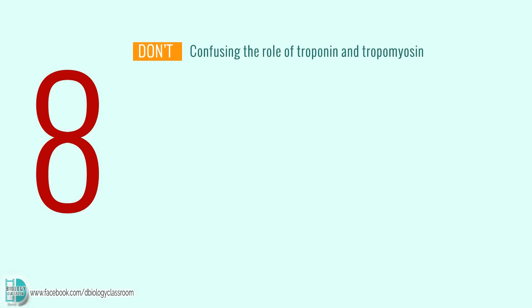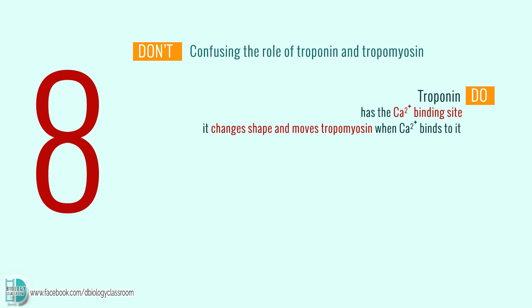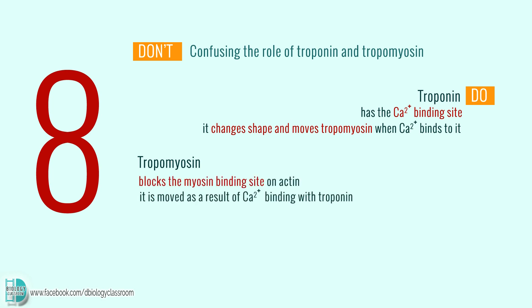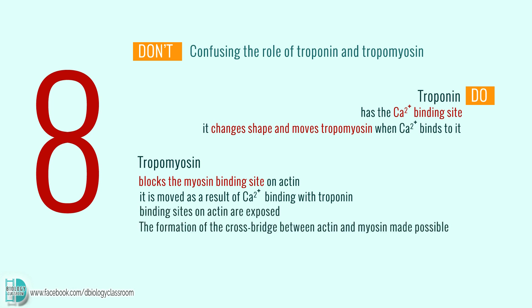Number 8: Confusing the role of troponin and tropomyosin. Troponin has the calcium ion binding site. When a calcium ion binds to troponin, it changes shape and moves tropomyosin. Tropomyosin usually blocks the myosin binding site on actin. When it is moved as a result of calcium ion binding with troponin, these binding sites are exposed and the formation of the cross-bridge between actin and myosin is made possible.